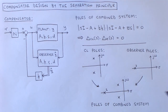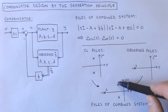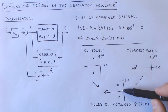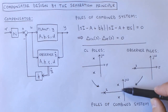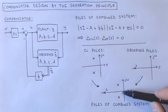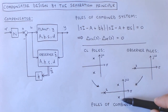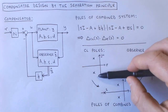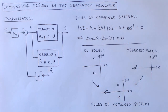If we place the observer poles relative to the closed-loop poles such that the closed-loop poles are dominant, then the dynamics of the combined system will be dominated by the closed-loop poles and will therefore not differ significantly from the behavior of the system without an observer. We will prove the separation principle at a later stage.